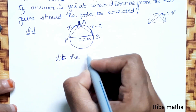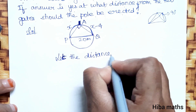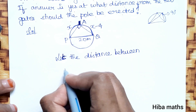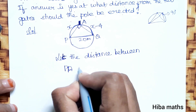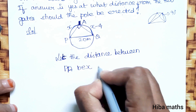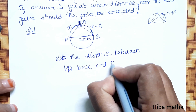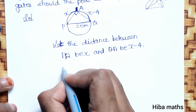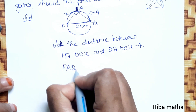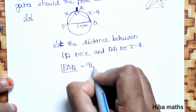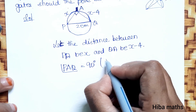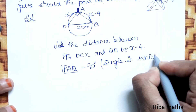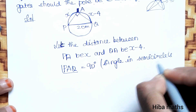Let the distance PA equal x, and QA equal x minus 4. The angle PAQ is equal to 90 degrees. The reason is that the angle in a semicircle is 90 degrees.